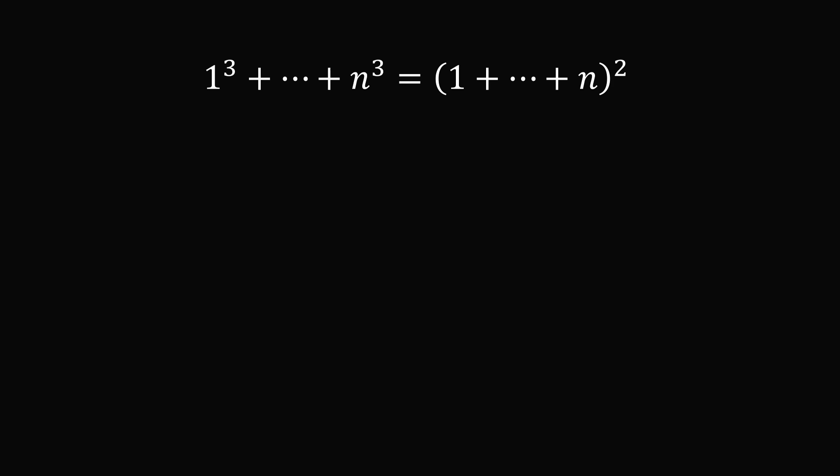This is such a surprising formula. I remember the first time I saw it, and I didn't even believe that it could be true. So why is it that the sum of the first n cubes is equal to the square of the sum of the first n numbers? There is a beautiful visual way to understand this formula.